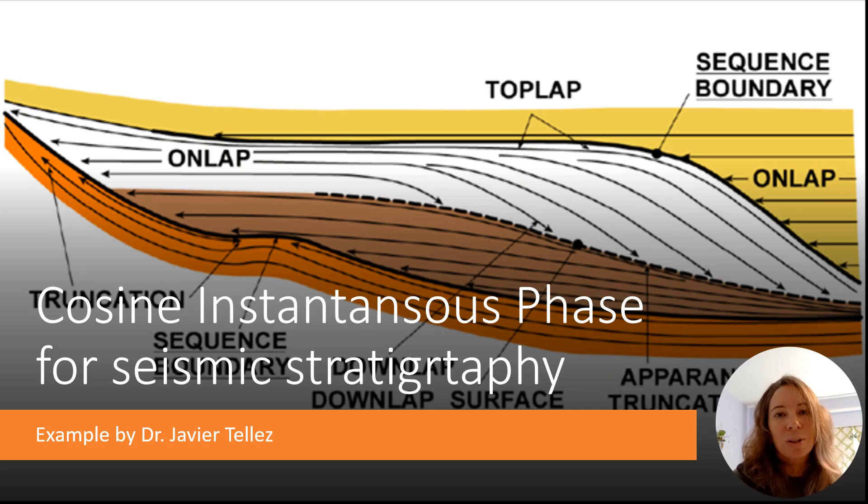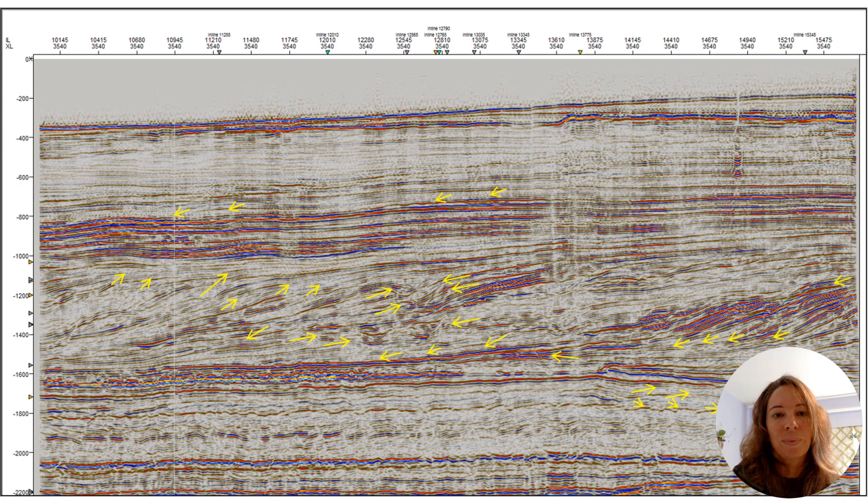I really quickly want to pause and focus on this cosine of instantaneous phase for seismic stratigraphy. Let's look at an example by Dr. Javier Telles from the Carnarvon Basin off of Northwest Australia. Here's a seismic section he had. With all those yellow arrows, you can notice the detailed seismic stratigraphy work that Javier did to understand the details of this prograding system.